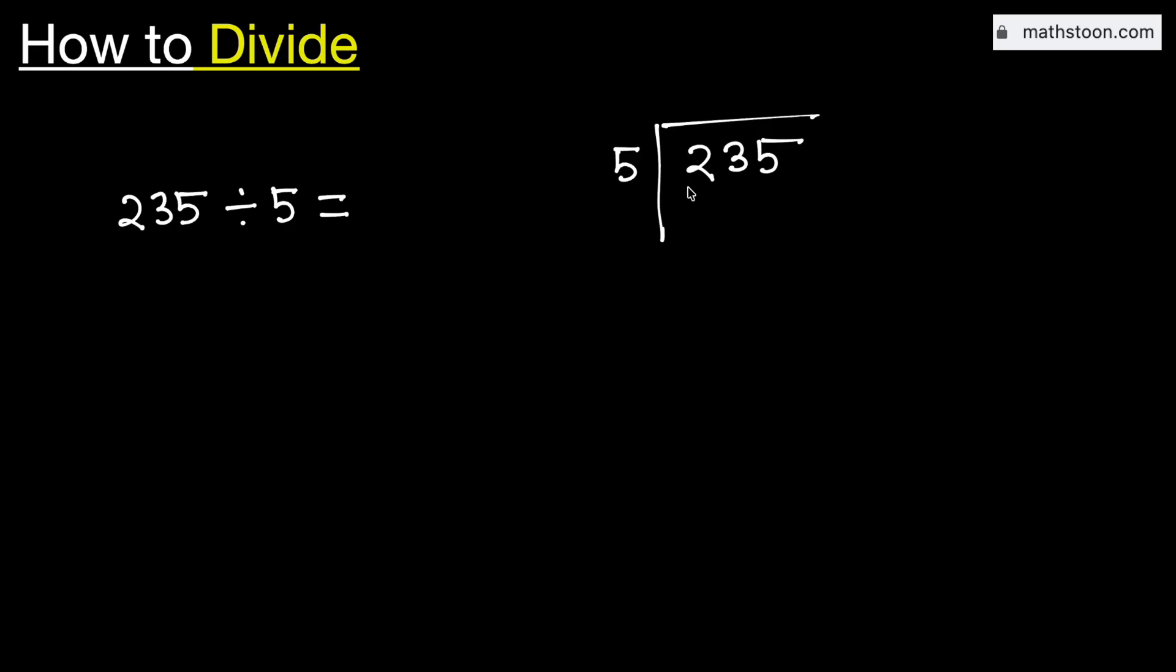Consider the number 2. It is less than 5. That is why we will consider the number 23. We know that 5 times 4 is 20. Subtracting, we get 3.